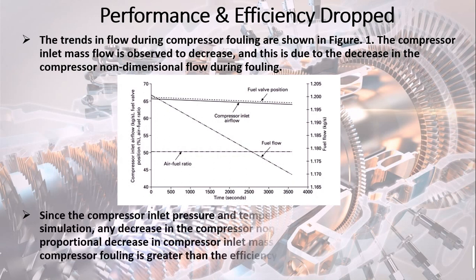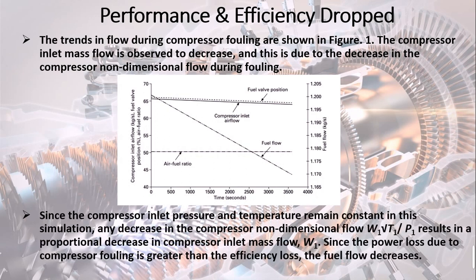Since the compressor inlet pressure and temperature remain constant in this simulation, any decrease in the compressor non-dimensional flow W1√T1/P1 results in a proportional decrease in compressor inlet mass flow W1. Since the power loss due to compressor fouling is greater than the efficiency loss, the fuel flow decreases.